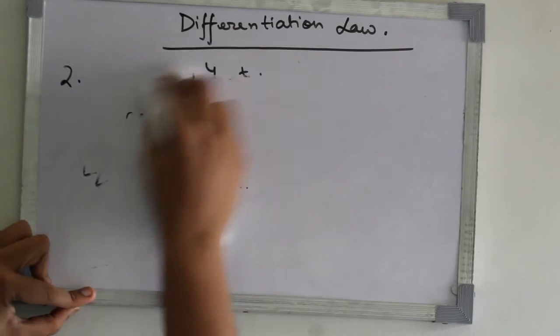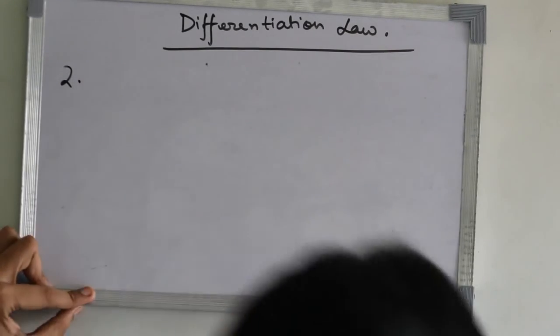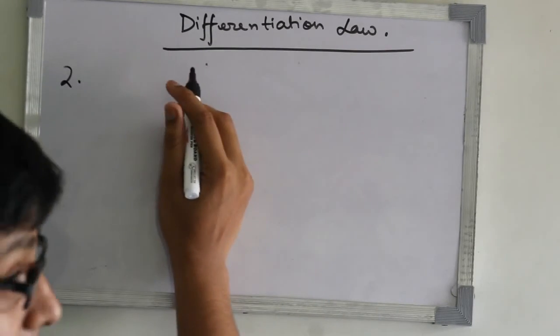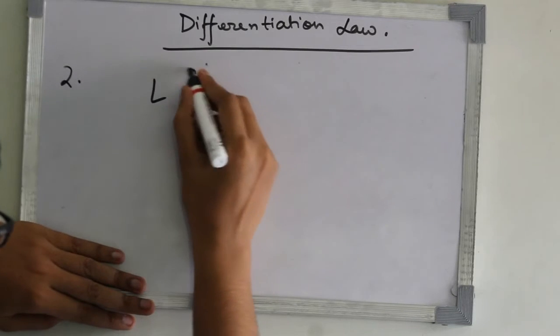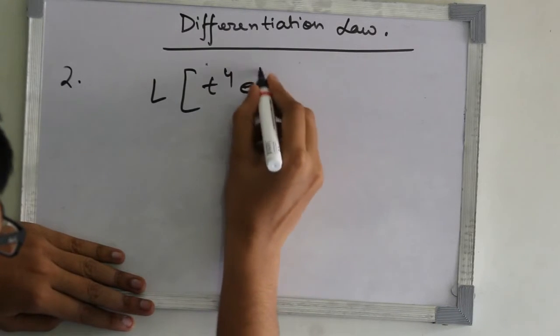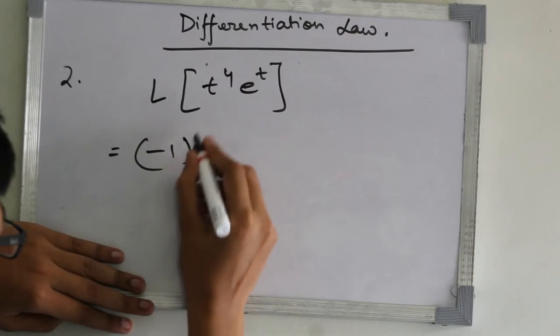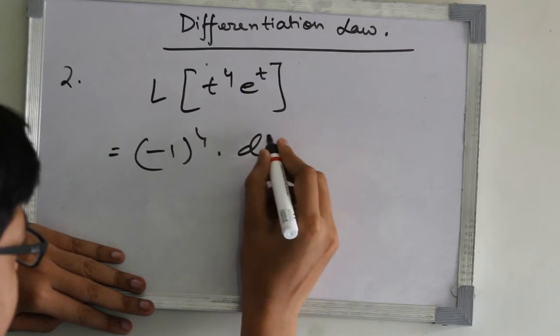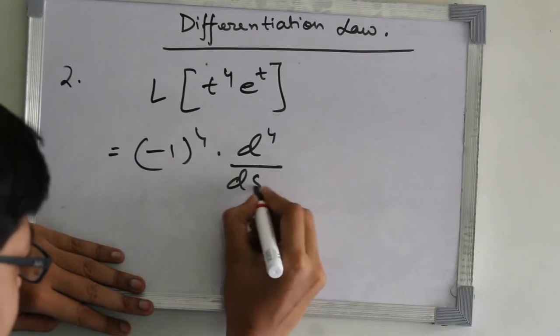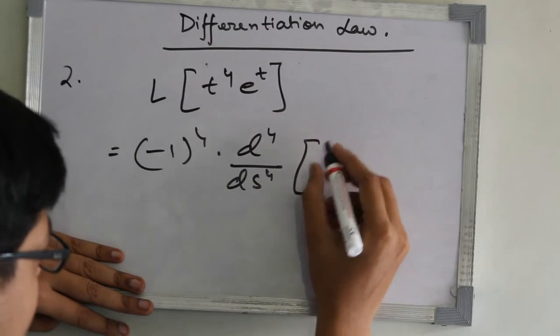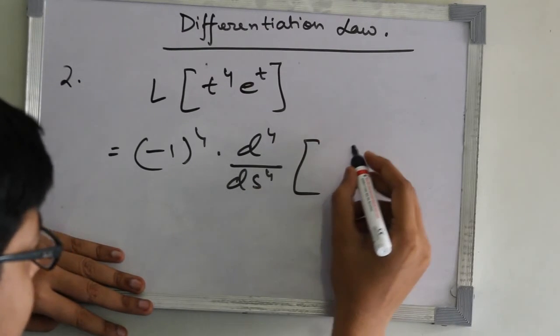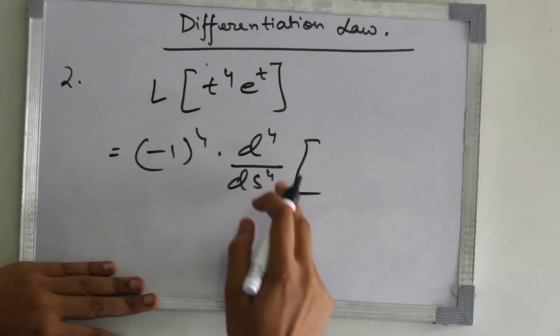According to the second law of differentiation, L of t to the power 4 e to the power t equals minus 1 to the power 4 times d4 ds4 of 1 upon s minus 1. This will be the final part.